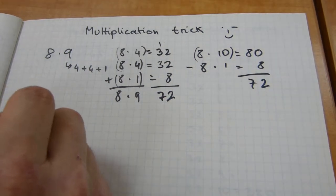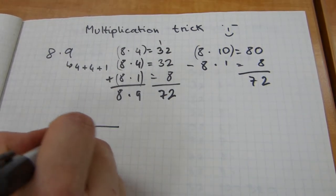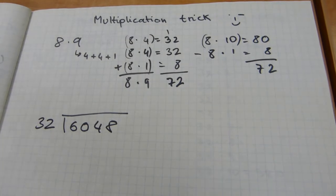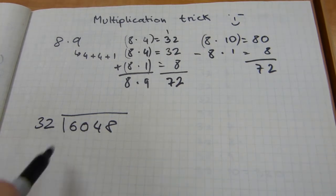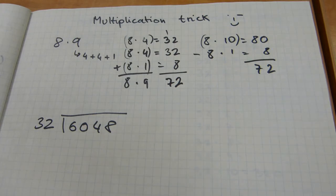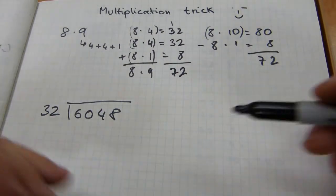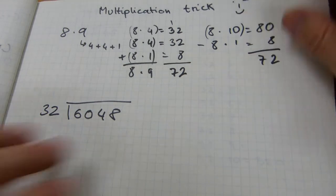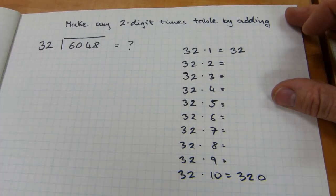Say a bigger number — how about 32? If you have to do long division, say 32 divided into 6048, it would be helpful to know a 32 times table, but nobody memorizes or even teaches that. Of course you can do it the old-fashioned way — see how many times 32 goes into 60, then the next number, and guess and check. Another way is to make up a multiplication table — a 32 times table — by addition. Very simple, as long as you can add. You can make up any 2-digit, 3-digit, or any-digit times table by adding.